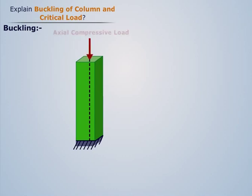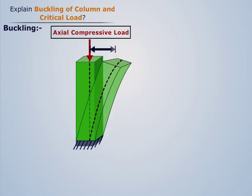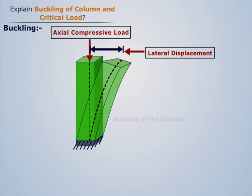When an axial compressive load is applied on the column, the column undergoes lateral displacement. This is known as buckling or crippling of the column as shown in the figure.